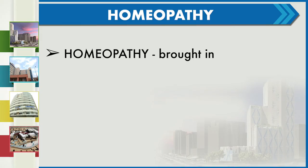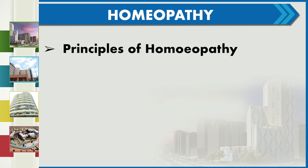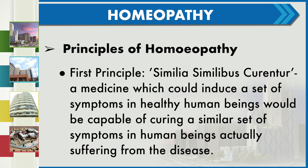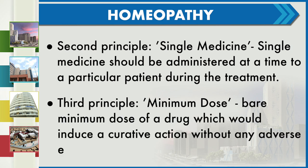Homeopathy was brought into India around 1810 AD by European missionaries and received official recognition in 1948 by the parliament. The first principle of homeopathy is Similia Similibus Curantur — a medicine which could induce a set of symptoms in healthy human beings would be capable of curing a similar set of symptoms in those actually suffering from the disease. The second principle is Single Medicine — a simple medicine should be administered at a time. The third principle is Minimum Dose — the bare minimum dose of a drug which would induce a curative action without any adverse effect.